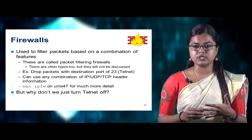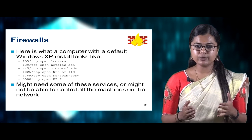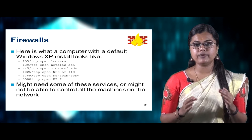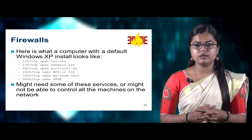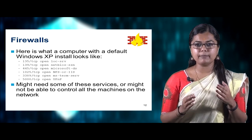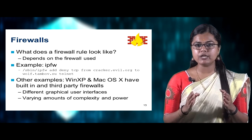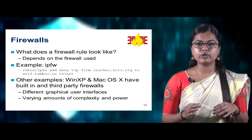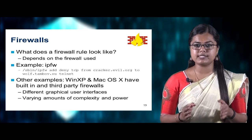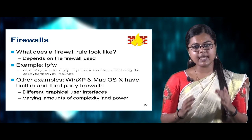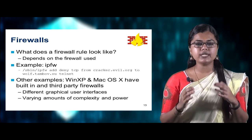You can use any combination of TCP or UDP header information — for example, man ipfw on Unix. When you look at the slide, you can see how a computer with a default Windows XP installation looks, with many open commands like TCP open UPnP — it may need some of these services or may not be able to control all machines on the network. What a firewall looks like depends on its need. Windows XP and Mac OS X have both built-in and third-party firewalls with different graphical interfaces and varying complexity.